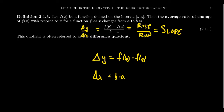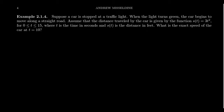Let's think about this not necessarily from a geometric point of view, but more from a story problem perspective. Suppose a car is stopped at a traffic light. When the light turns green, the car begins to move along a straight road. Assume the distance traveled is given by the function s(t) = 3t² for the first 15 seconds, where t is measured in seconds and s(t) is measured in feet.